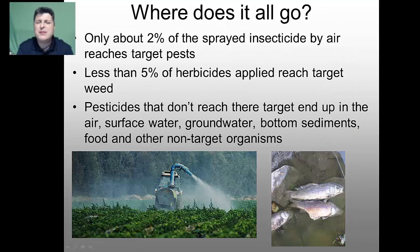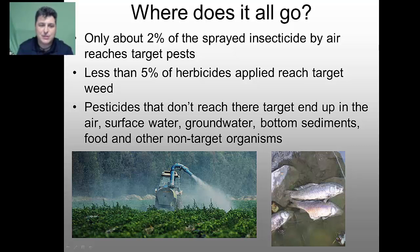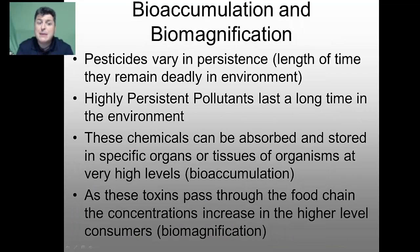Where does the pesticide actually go? Unfortunately, only about 2% of sprayed insecticide applied by air will actually reach its target pests, and less than 5% of herbicides applied reach their target weed. The pesticides that don't reach their target end up in the air, in surface water, in groundwater, in bottom sediments, and on food and other non-target organisms, and can lead to the death of these non-target species.